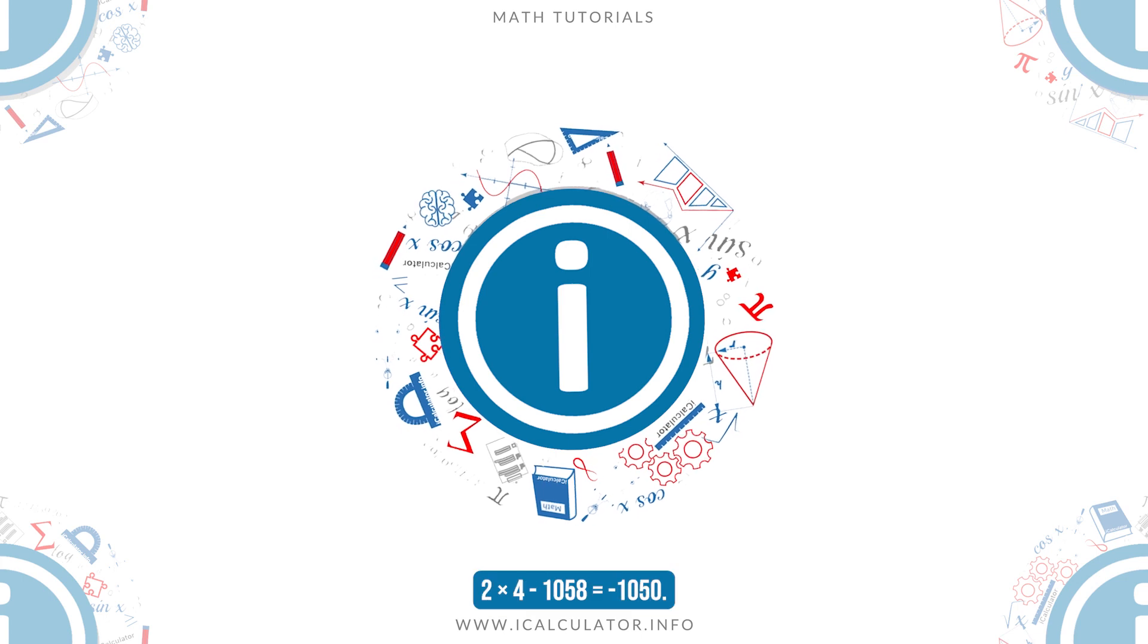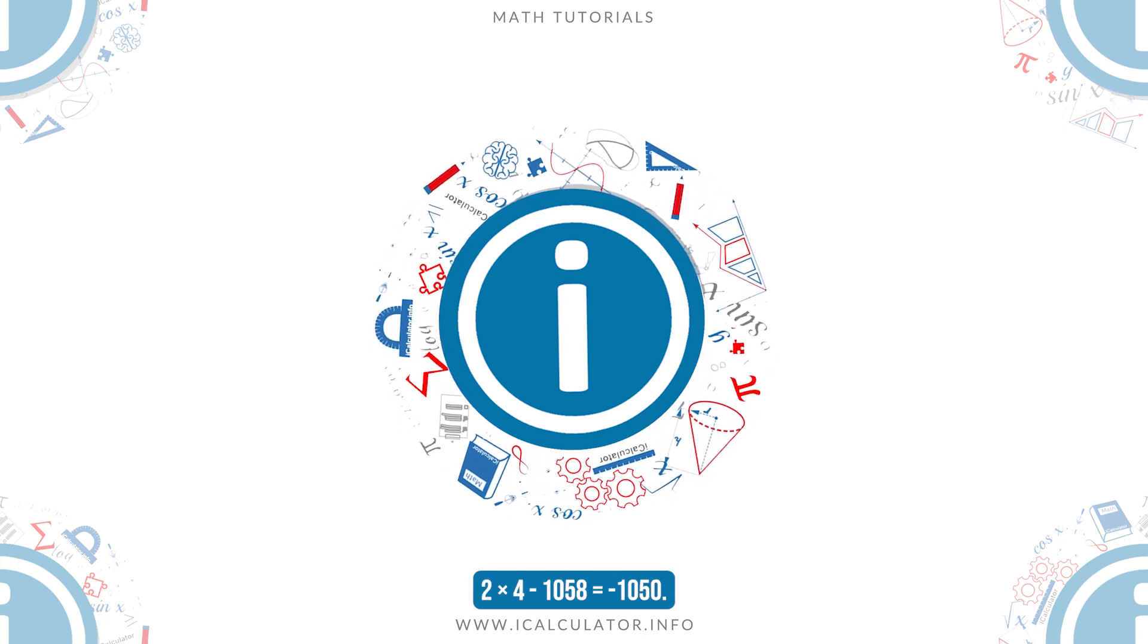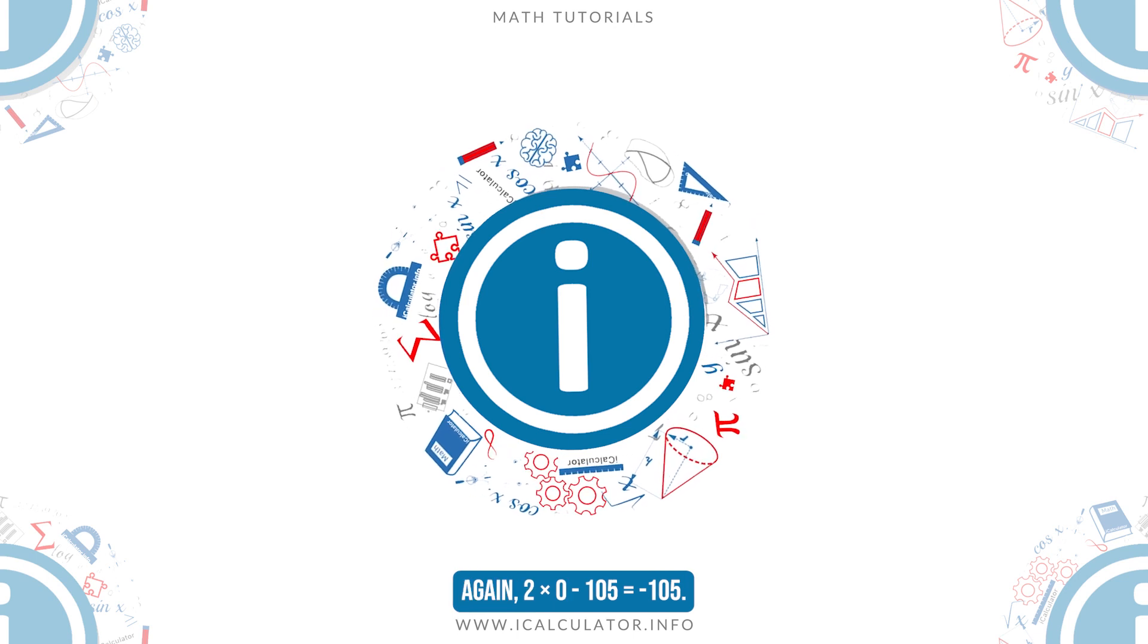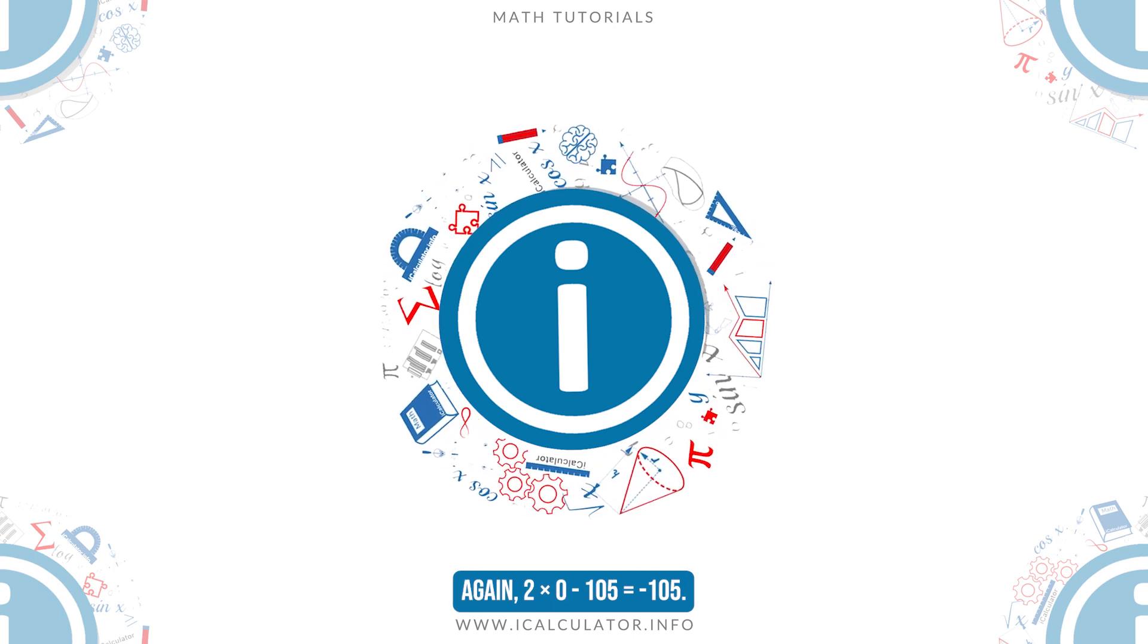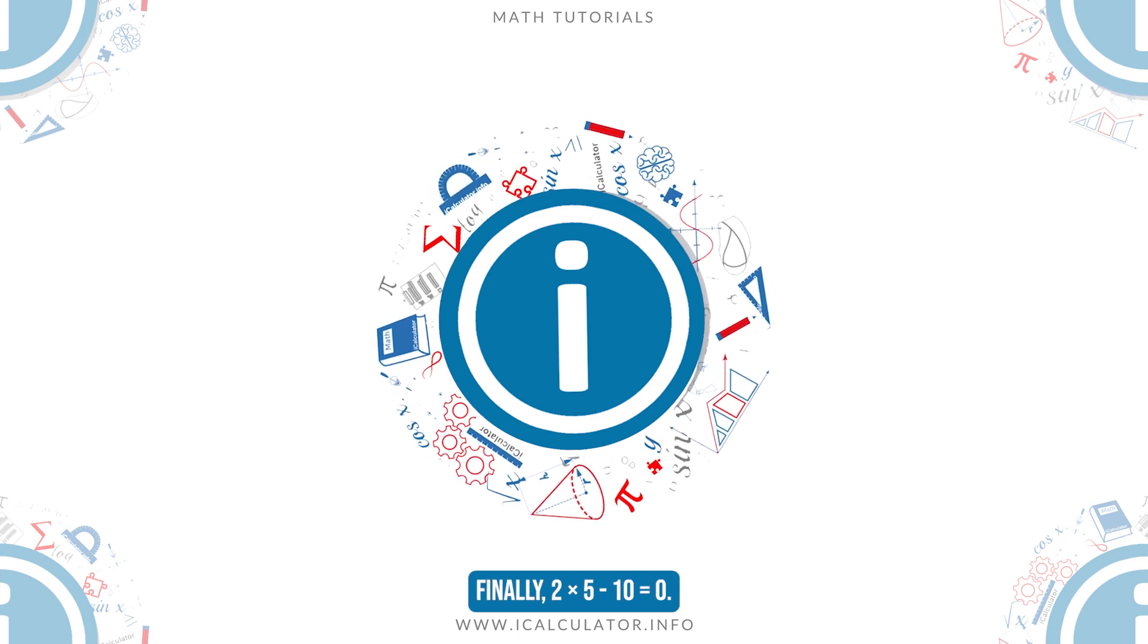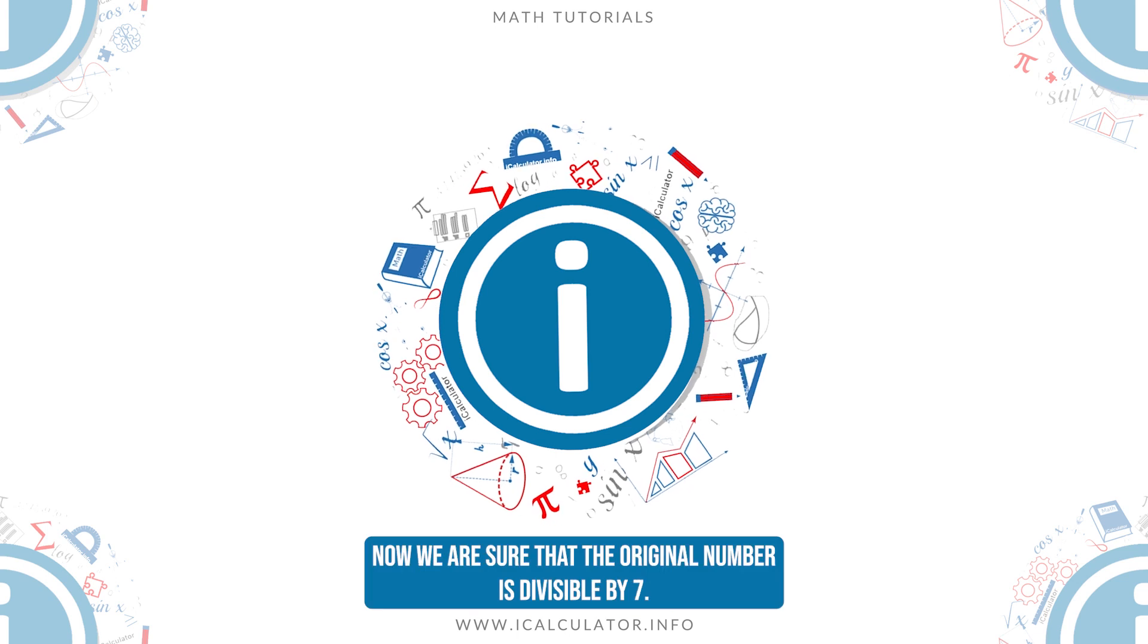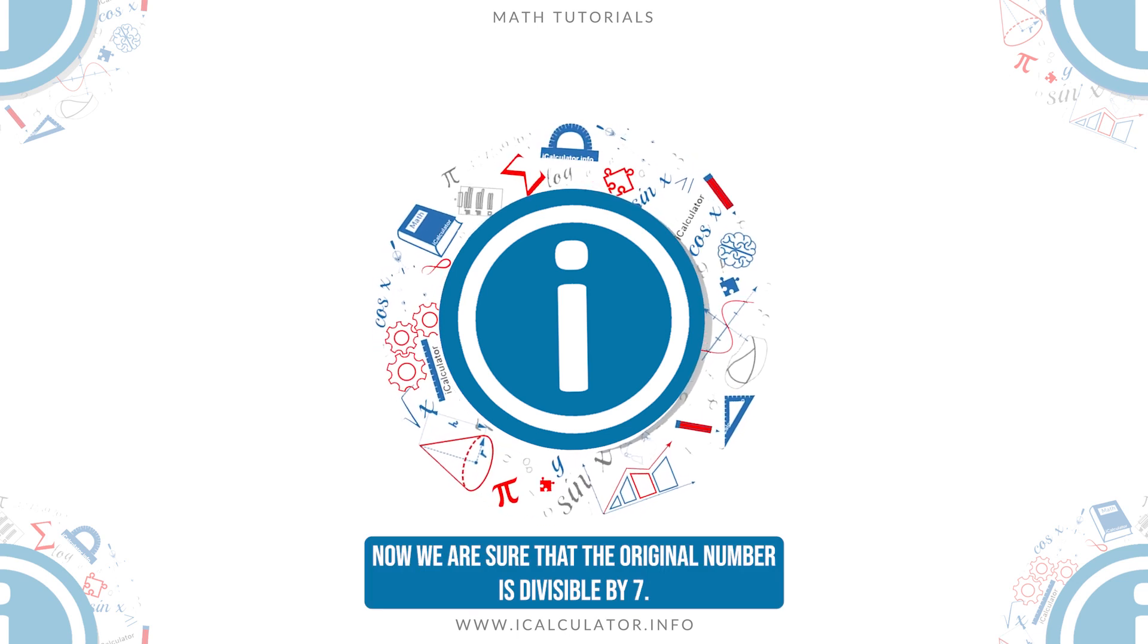Forget the minus, i.e. 2 times 4 minus 1058 equals minus 1050. Again, 2 times 0 minus 105. Finally, 2 times 5 minus 10 is equal to 0. Now we are sure that the original number is divisible by 7.